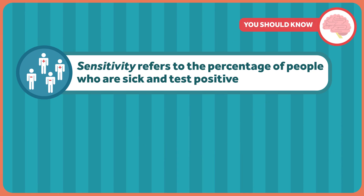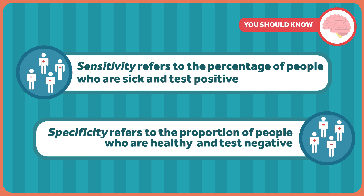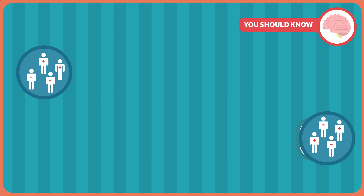In case you haven't watched the sensitivity and specificity episode, or you've forgotten some of the details, here's the TLDR version. Sensitivity refers to the percentage of people who have a disease who will have a positive test. Specificity refers to the percentage of people who don't have a disease who will test negative. That's not what people usually want to know. They want to know if they have a positive result, what percentage of people will have a disease. Or if they have a negative result, what percentage of people will be healthy — they want to know what those tests mean.